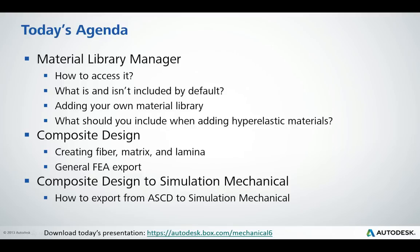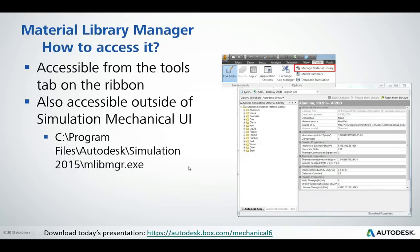How do you access the Material Library Manager? This is a common question we get from customers who want to add their own materials to a custom library. It's accessible through the Tools tab on the ribbon — there's a button that says Manage Material Library. Click on that and it will bring up the Material Library Manager. It's also accessible as a stand-alone application located in your Program Files directory under Simulation 2015, then mlib.exe.